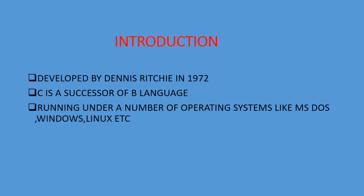First of all, what is C? It has been developed by Dennis Ritchie in 1972 at Bell Labs, USA. It is a successor of the B language, meaning it is the advanced version of the B language. It can be run under a number of operating systems like MS-DOS, Windows, Linux, etc.